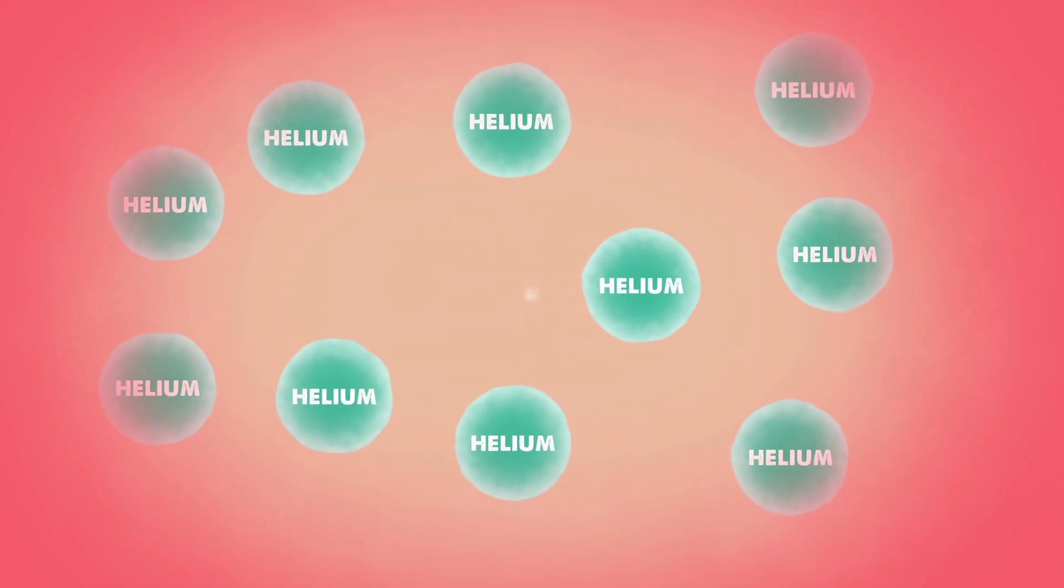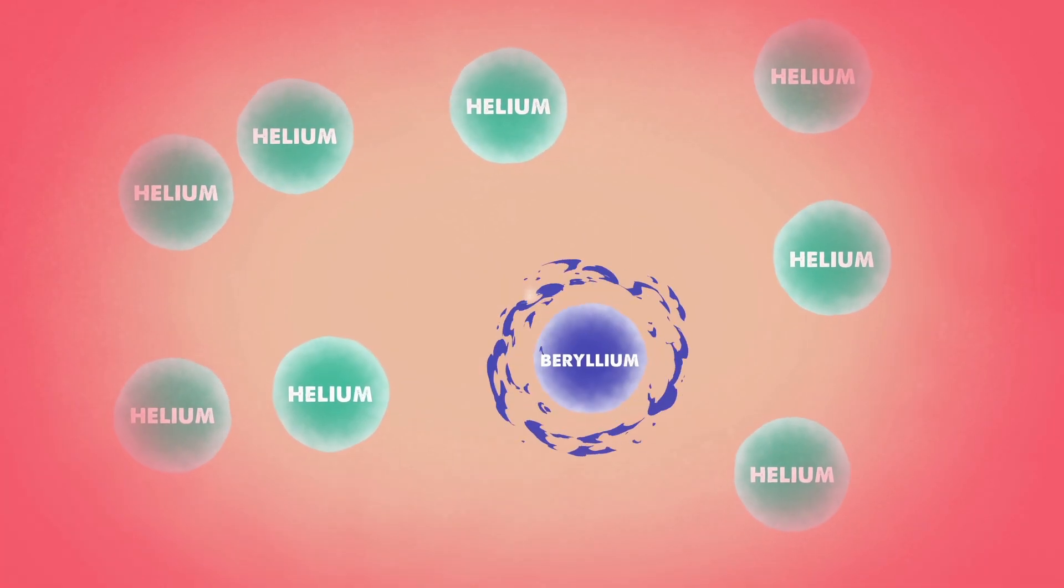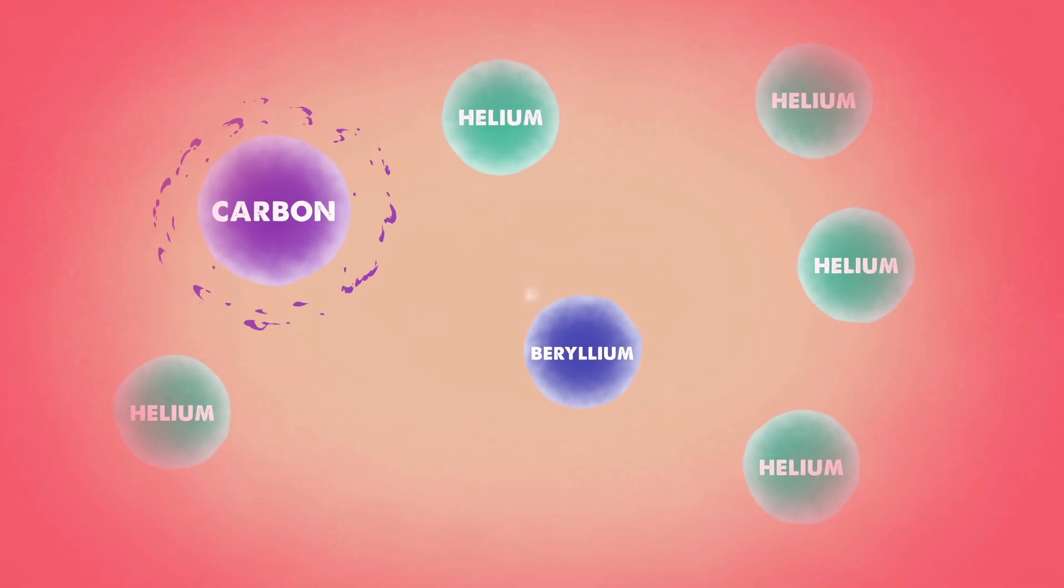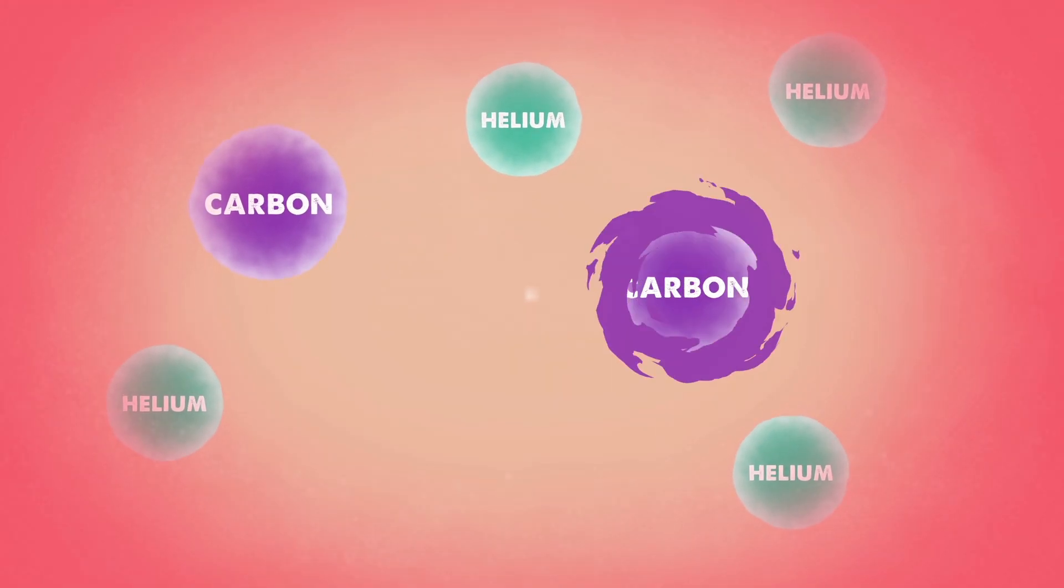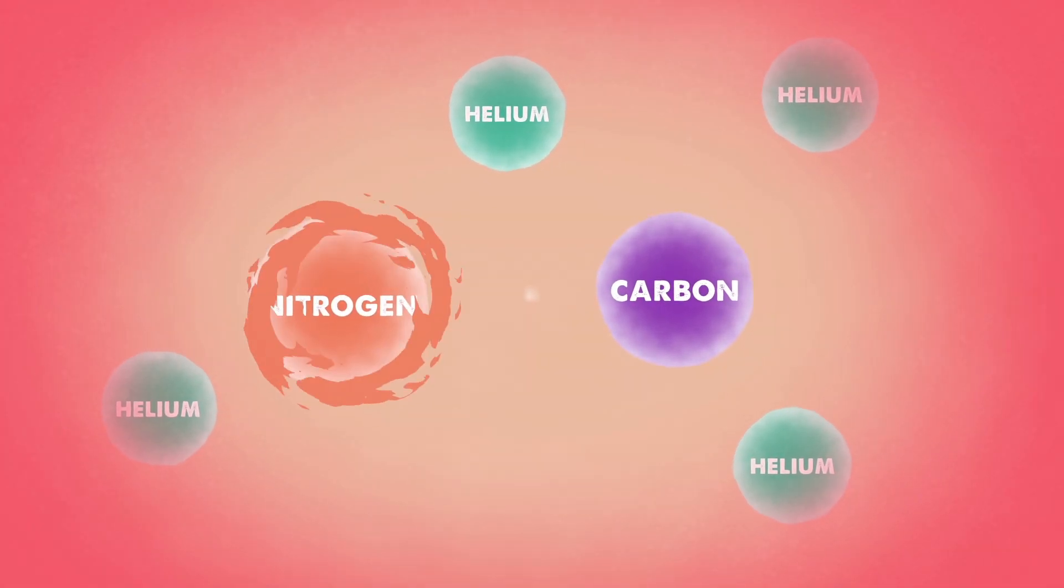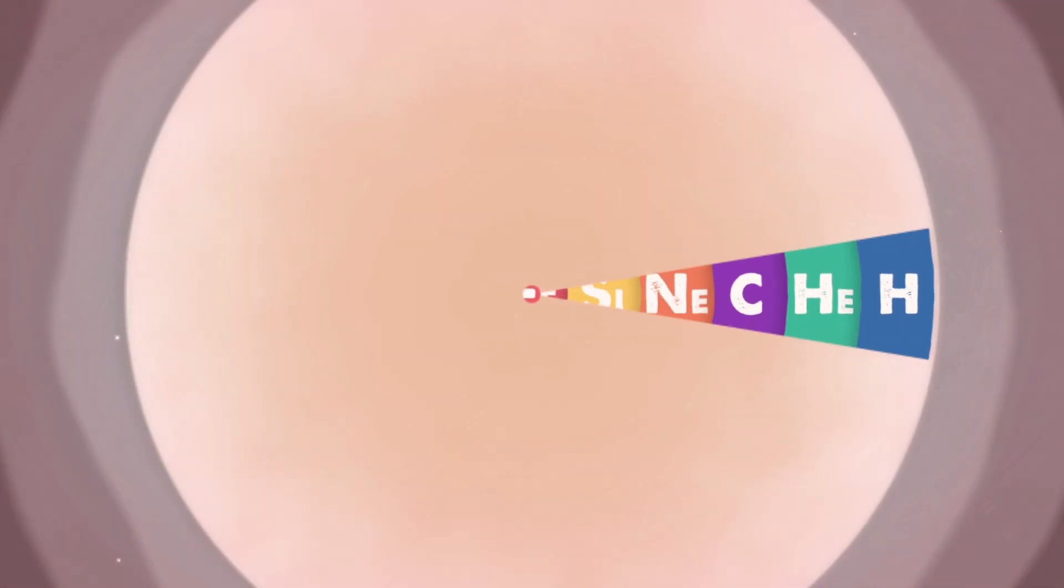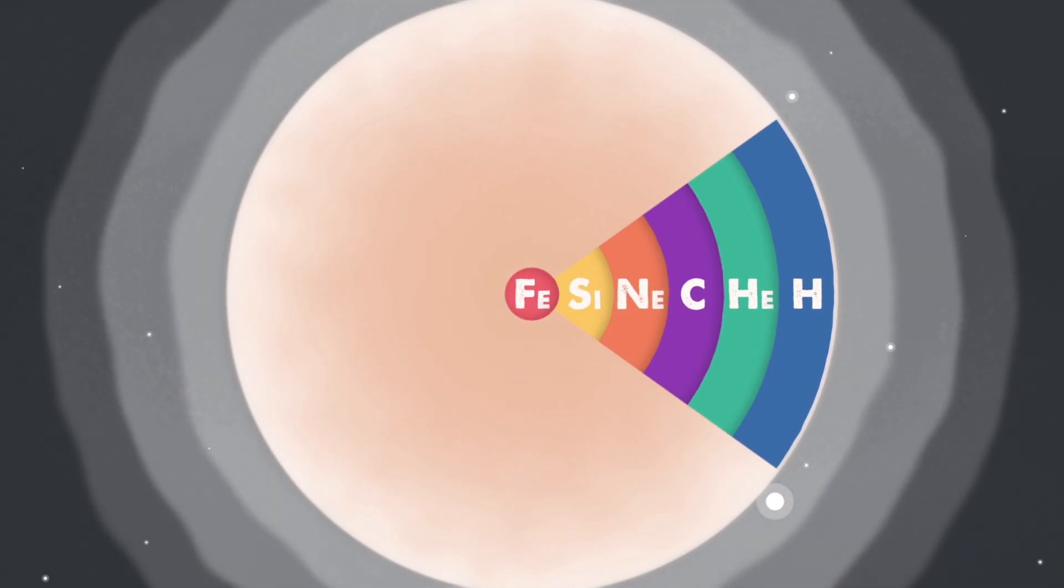Due to the extreme temperatures and pressures of giant stars, two helium atoms collide to form beryllium. Beryllium, with another helium element, creates carbon, which, when combined with burning hydrogen, produces nitrogen, as well as other elements produced as the result of star phenomena like supernovae and merging neutron stars.